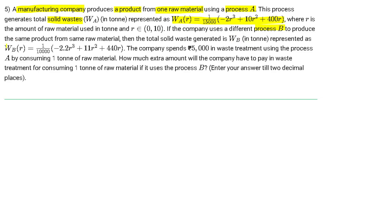Further, the question states that the company has to spend ₹5000 in waste treatment using process A when consuming one ton of the raw material. The question asks: how much extra amount will the company have to pay in waste treatment for consuming the same one ton of raw material but using process B?